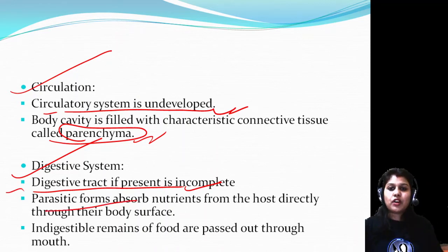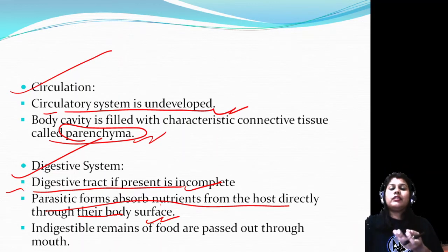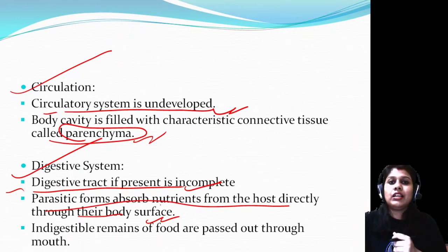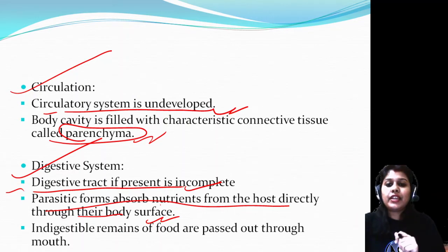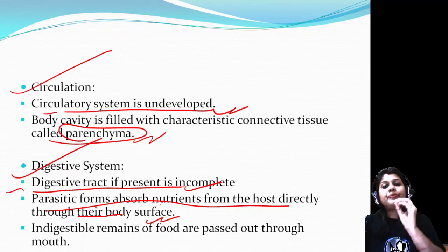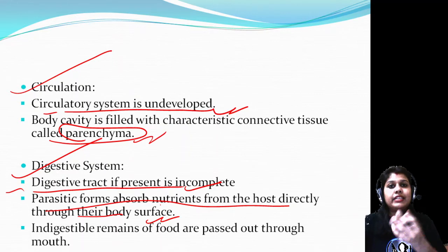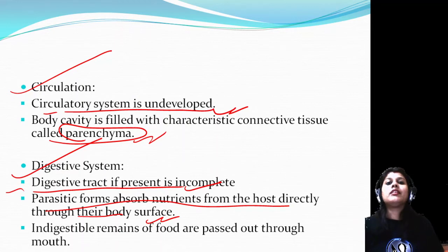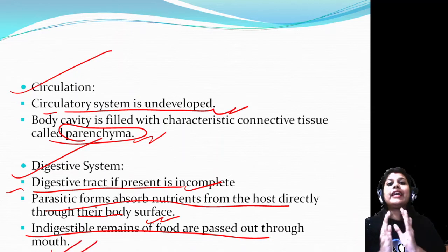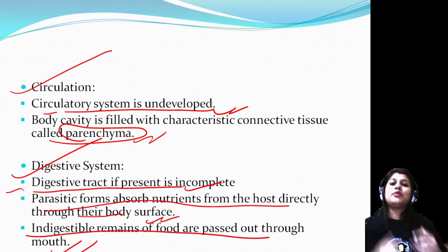Parasitic forms absorb nutrients from the host directly through their body surface. These animals are basically parasites that depend on living hosts. They gather food from the host by absorbing it through their own body surface. Indigestible remains of food are passed out through the mouth, since anus is absent.